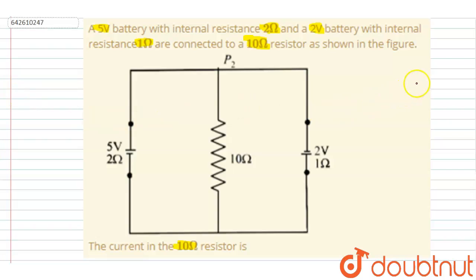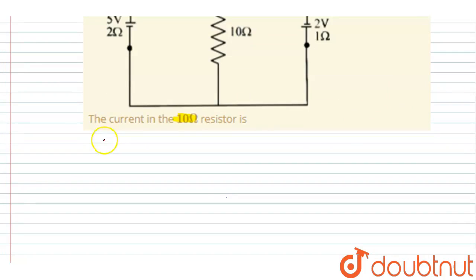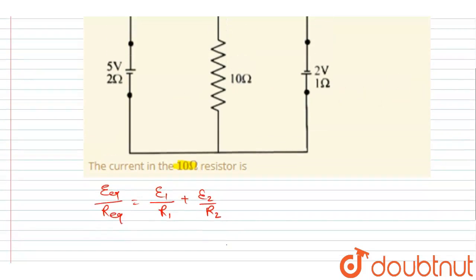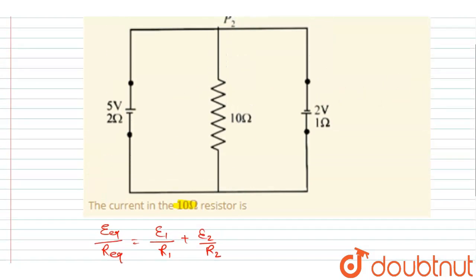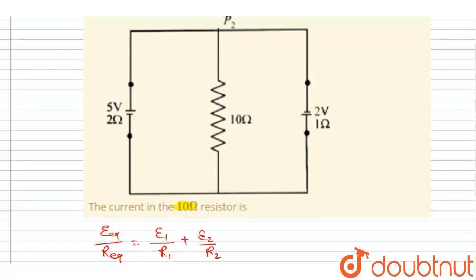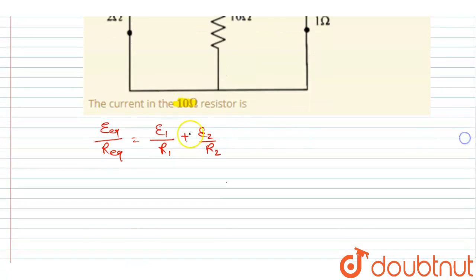Now let's calculate the E_equivalent across the 10Ω resistor. So E_equivalent/R_equivalent is simply E1/R1 + E2/R2. Now you can see in the diagram both batteries are connected with opposite polarity. The positive terminal of the 5-volt is connected to the negative terminal of the 2-volt, so I will put a negative sign here.